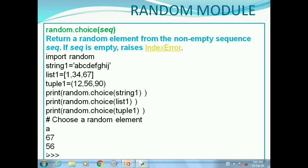list1 is equal to 1, 34, 67. random.choice list1 will generate any number from 1, 34, and 67. tuple1 is equal to 12, 56, 90, and random.choice tuple1 will generate any number that may be 12 or 56 or 90.